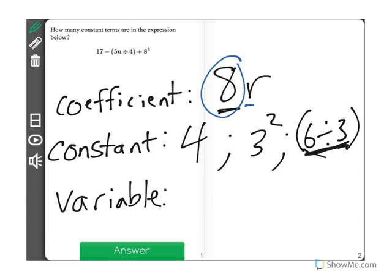Variable terms are any time you see a term like 8y or 4y squared. And the reason is, y can be different numbers. It can vary. In this case, however, we're looking for constant terms, which are terms that don't change.